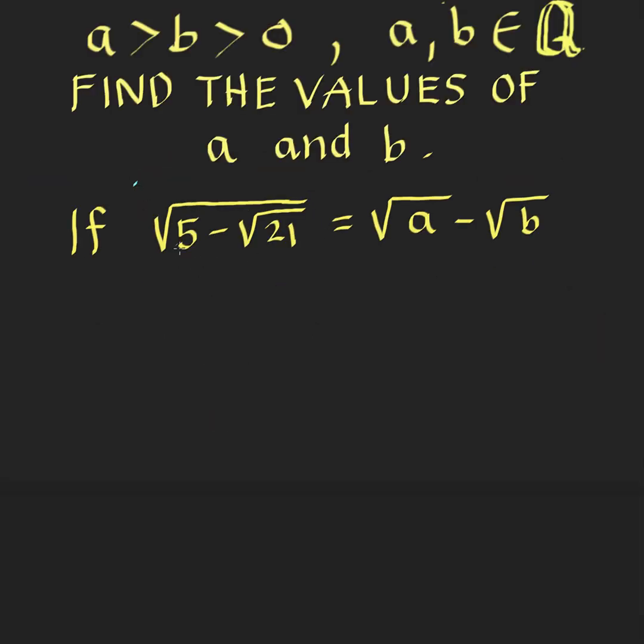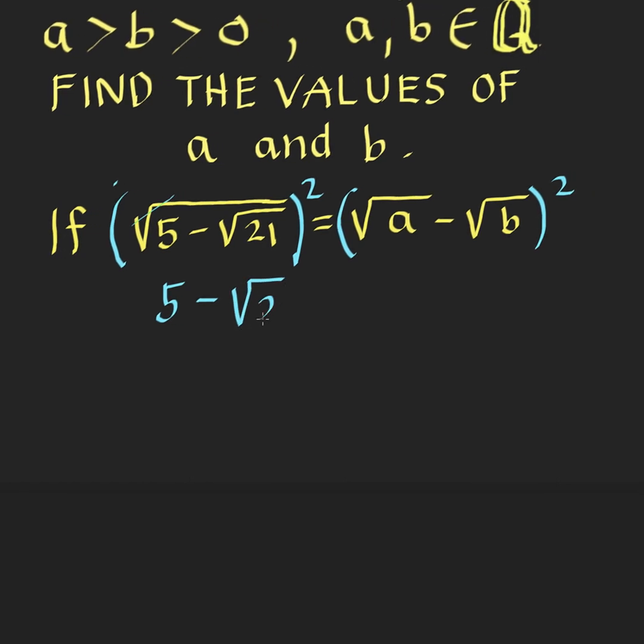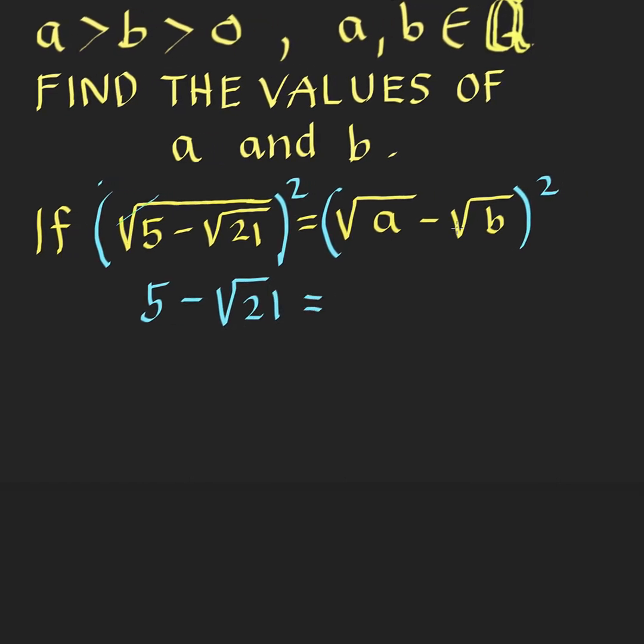In order to eliminate the radicals, let's begin by squaring both sides of this equation. So square both sides. By doing so, we'll eliminate this radical here. So what we have is 5 minus square root of 21 equals the square of this binomial.